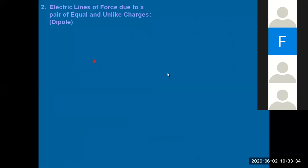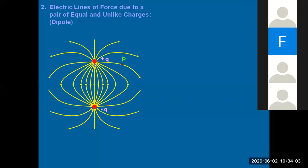Today we will look at what is an electric dipole. A dipole consists of two equal and unlike charges — equal meaning the magnitude is the same (both q), and unlike meaning one is positive and the other is negative. For electric field lines of a dipole, positive charge lines go outward and negative charge lines go inward, as clearly shown by the arrow marks in the diagram.